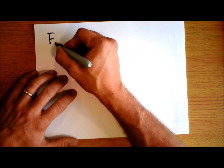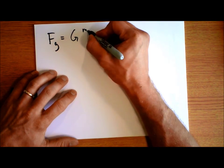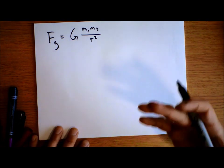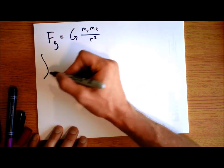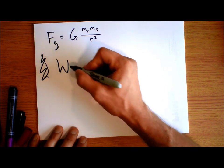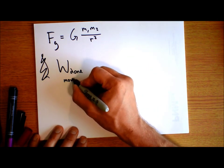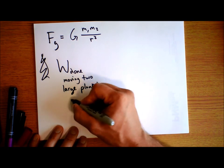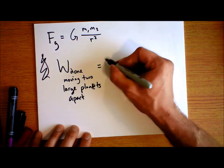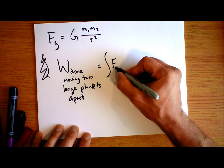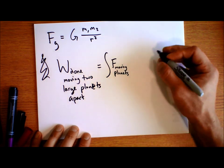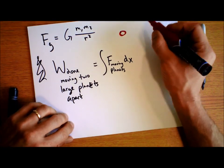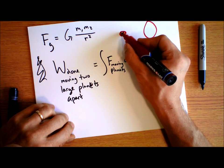Sometimes the force of gravity is written as G times m₁ times m₂ over r squared — this would be the case where you're not near Earth's surface. So we can calculate the work done by the force of gravity in this case also. Let's compute the work done moving two large planets apart.